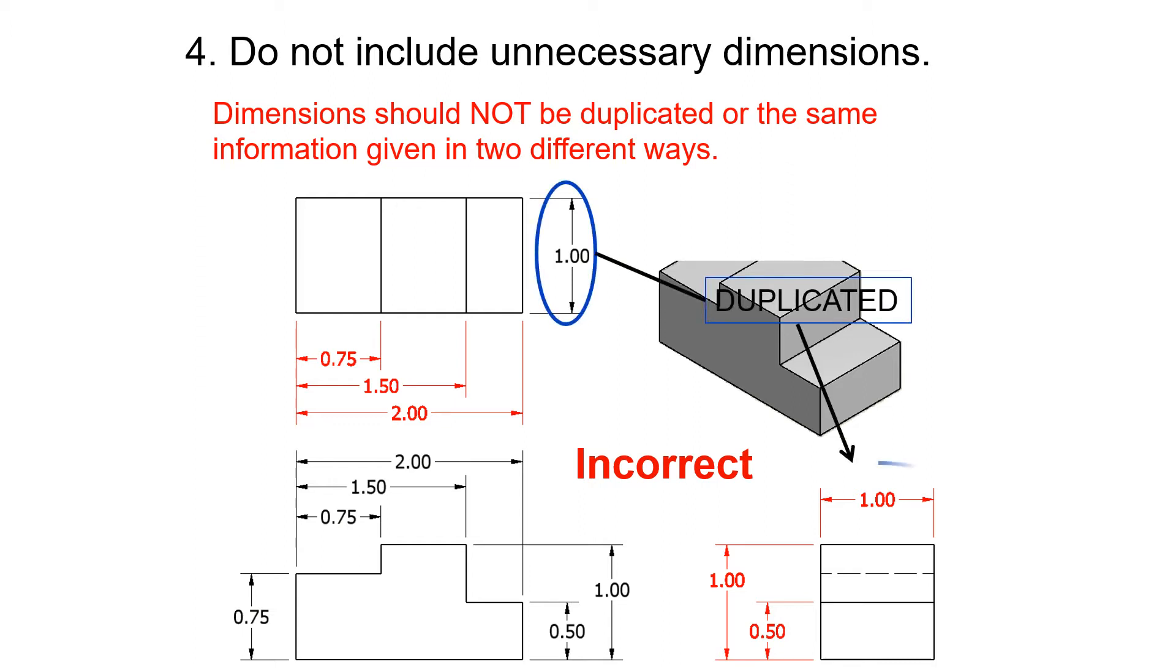See how there's all these double dimensions here? This depth is actually shown twice, so you don't have to show that depth twice. Once you show it, you know what it is. And this height is shown twice. You only need to show it once. This width is that width, so you don't need both.